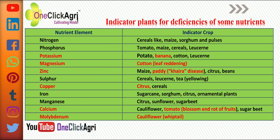We will see that type of deficiency in the pathology section. Fifth is zinc — indicator plants are maize, paddy (khaira disease in paddy is due to zinc deficiency), citrus, and bean. Sixth is sulfur — indicator plants are cereal, lucerne, tea, and allium. Tea and allium are particularly important for sulfur.